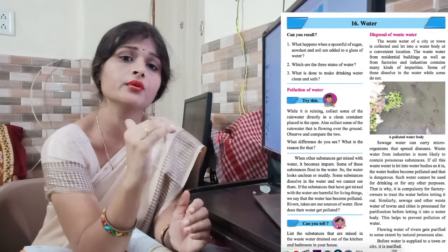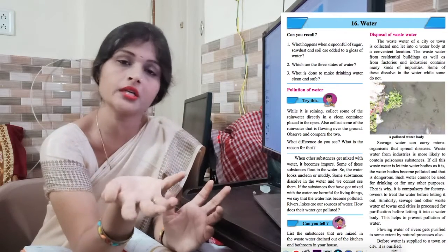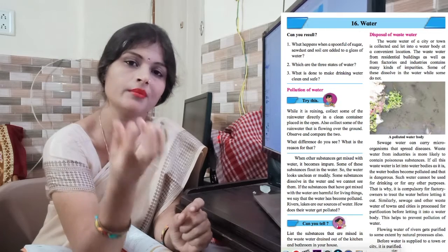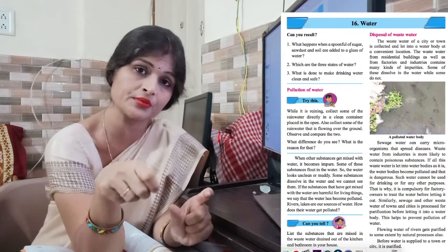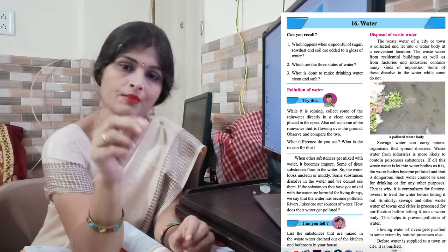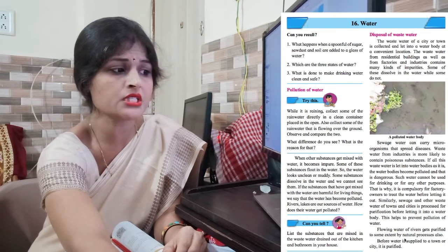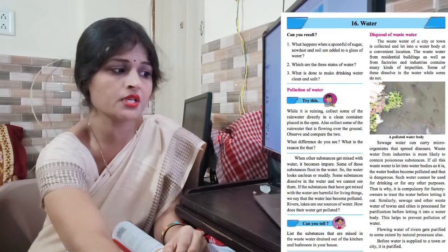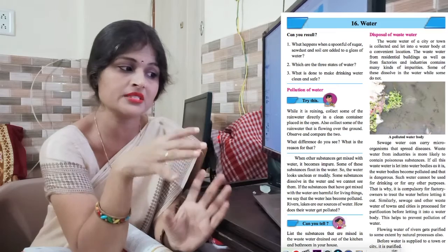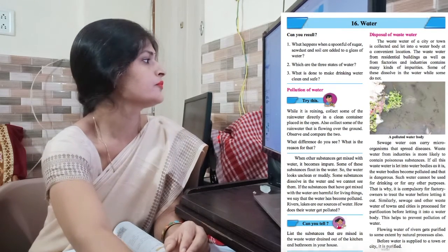Some people keep filters at home. If you don't have a filter, you can use plastic, cloth, or alum to purify water. Before water is supplied to a town or city, it is purified. Whatever water comes from the city supply has been purified before reaching us.